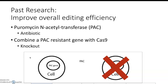Another approach that has been used is puromycin acetyltransferase, or PAC, in conjunction with transfections. PAC is an antibiotic resistance gene. Researchers combine a PAC-resistant gene with the Cas9. After transfection, when puromycin antibiotic is introduced into the media, cells that successfully have the PAC-resistant gene survive, while cells without it die, effectively selecting for successfully transfected cells.